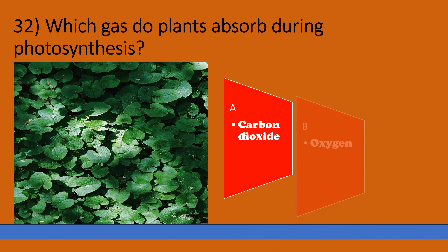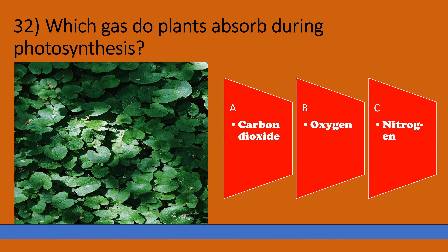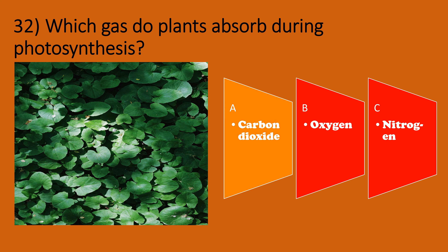Which gas do plants absorb during photosynthesis? A: Carbon dioxide, B: Oxygen, C: Nitrogen. The correct option is A, Carbon dioxide.